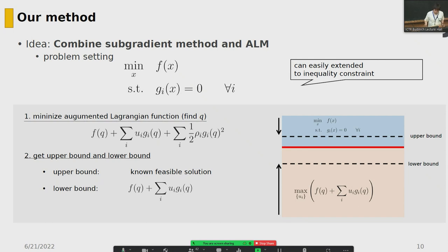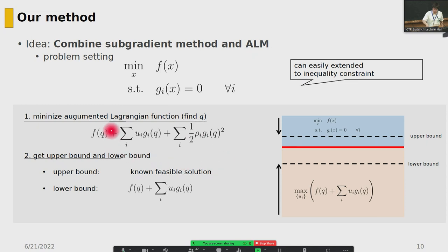This is my algorithm. First, set up the problem: minimize f(x) subject to equality constraints g_i = 0. Note that we can easily extend this to inequality constraints without adding any slack variables. Our approach is to minimize the augmented Lagrangian function, which consists of a linear term and a quadratic term. After getting a solution — for example, from a quantum annealer — we derive the lower bound at this point.